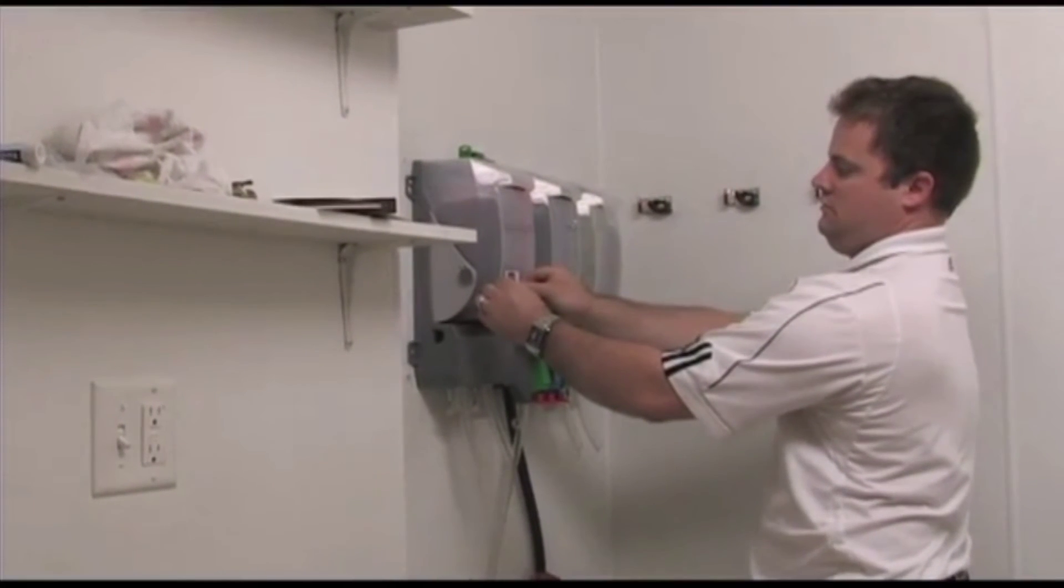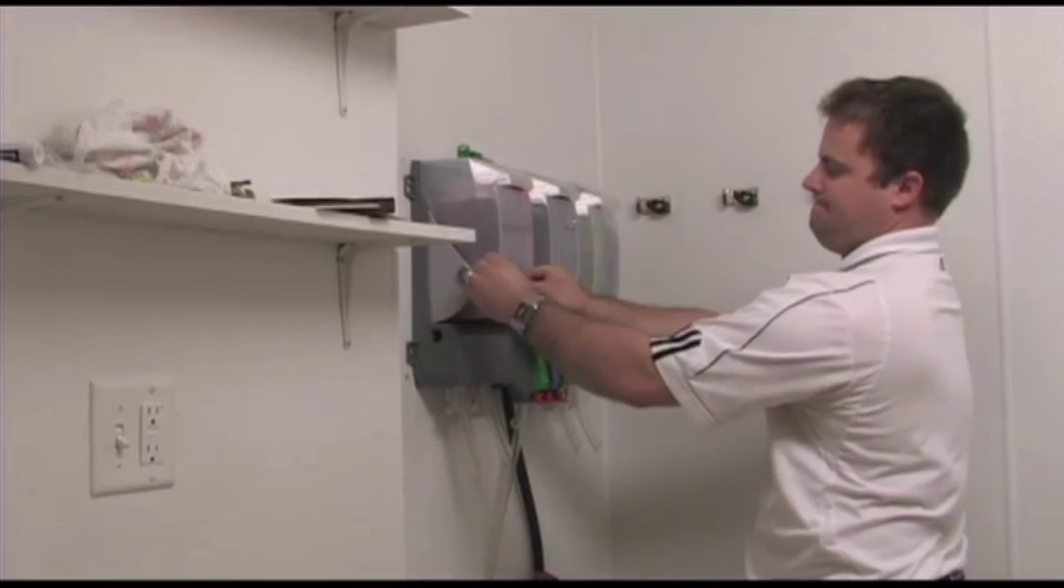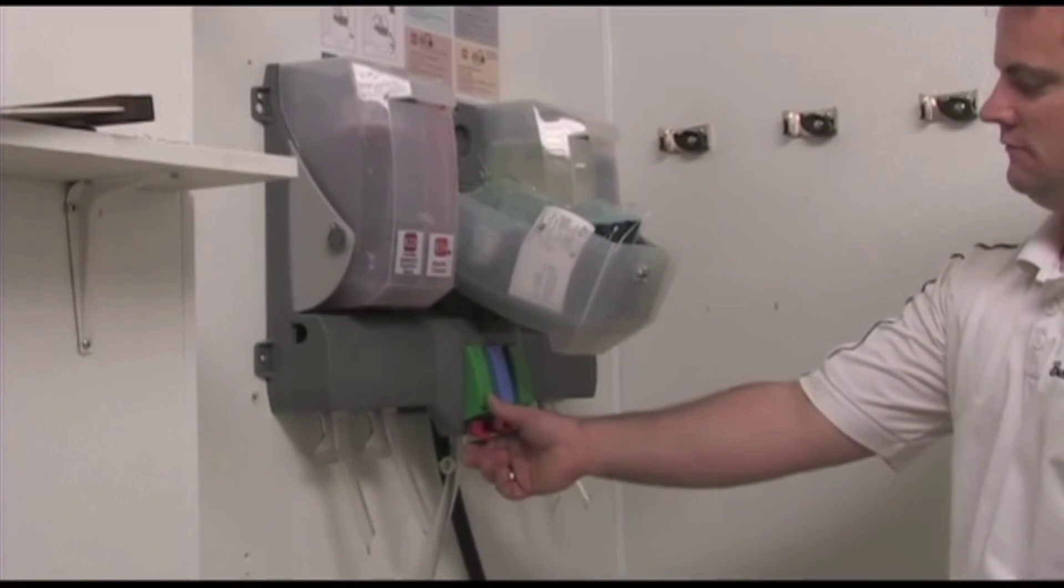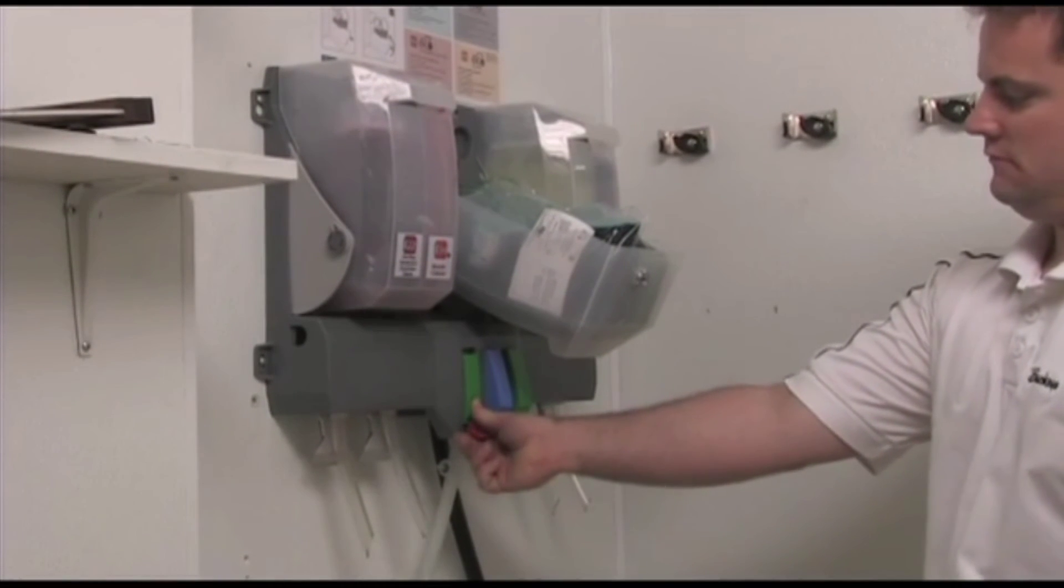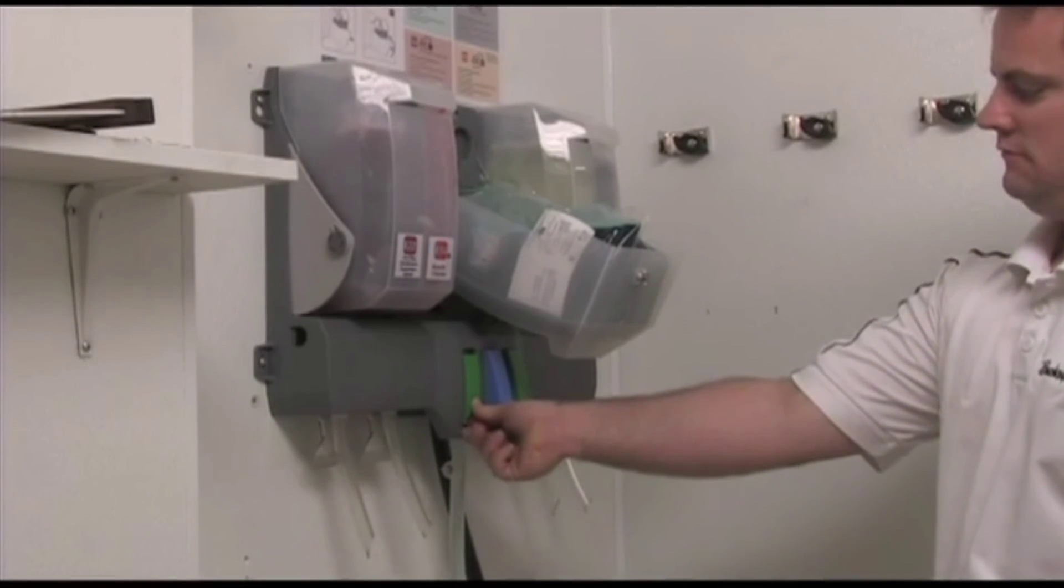Apply eco-product decals to the appropriate bucket position. Prime the eco-proportioning system by engaging each low-flow switch and each high-flow button to allow chemical to fill the lines completely. This takes approximately 20 seconds.